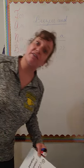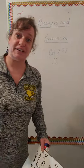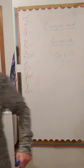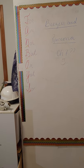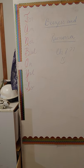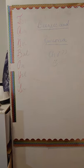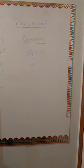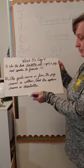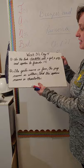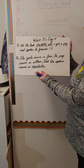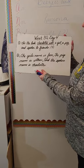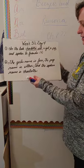I'll be going in and out of this video because we're stuck inside with the rain today. Week 30, day 4 - we have lots of corrections to make. There are four on the top. In the book Charlotte's Web, A Girl, A Pig, and A Spider Be Friends.